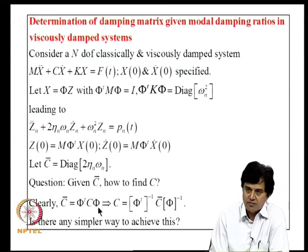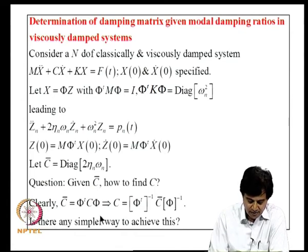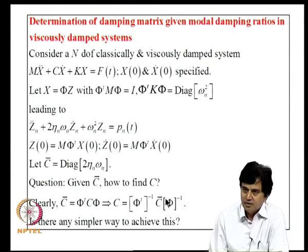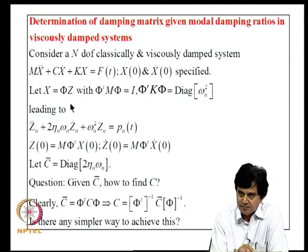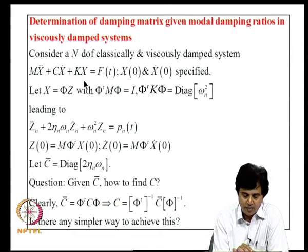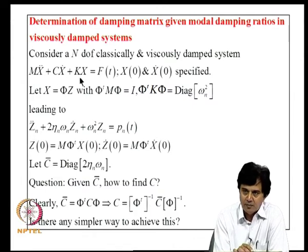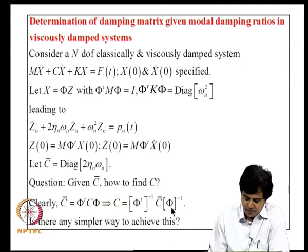Clearly C-bar = φᵀCφ, so in principle if φ is square we could invert to get C. However, in practice we prefer to avoid matrix inversion. More importantly, we typically don't compute all N modes — only the first few — so φ is rectangular with rows equal to degrees of freedom and columns equal to retained modes, making direct inversion infeasible.